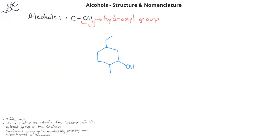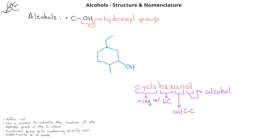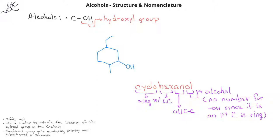In this cyclic compound, we have an ethyl substituent, a methyl substituent, and a hydroxyl functional group on the 6-carbon ring. Since it's a 6-carbon ring, we would name it cyclohexan and add the suffix OL for the hydroxyl group. We would not need a number since, in a ring, by definition, the functional group is on the first carbon. We number around the ring in the direction that gives the methyl and ethyl substituents the lowest total numbers — in this case clockwise — so the methyl is on the second carbon and the ethyl is on the fifth carbon. The name of this compound would then be 5-ethyl-2-methylcyclohexanol.